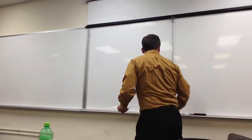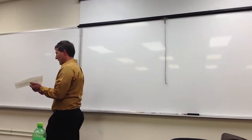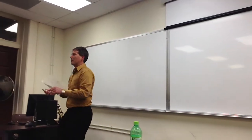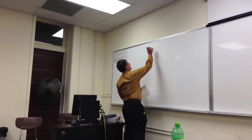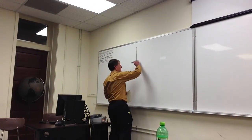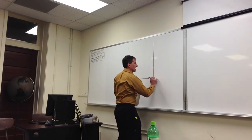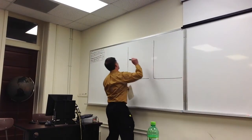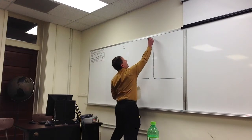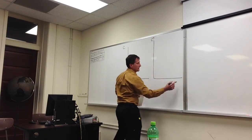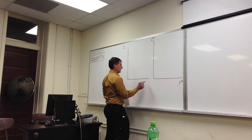Alright, so last time we started building a model of comparative advantage called the Ricardian trade model. If you happen to be gone last time, you need to redraw this. Otherwise, those of you who were here already have this and don't need to redraw it. Just open your notes to that point.